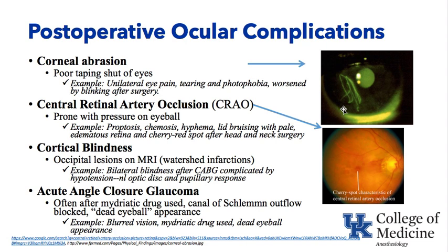Cortical blindness is an occipital lesion — the brain itself has been damaged, often a watershed infarction in an area at risk during low blood pressure or low cardiac output states. Cardiopulmonary bypass is one example: a patient undergoes cardiac surgery with prolonged low blood pressure and wakes up with bilateral blindness, a normal optic disc, and normal pupillary response — but just cannot see. The problem is with the occipital lobe, not the eye or its nerves.